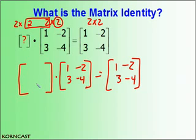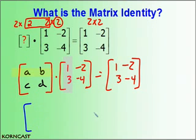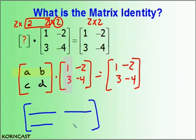When multiplying, a 2 by 2 times a 2 by 2 gives a 2 by 2. Since I don't know the values of the unknown matrix, I'll use variables A, B, C, and D. I'll multiply these two matrices out. Recalling that I multiply rows times columns, I'll give myself space for four elements — two rows and two columns — and then multiply those values.